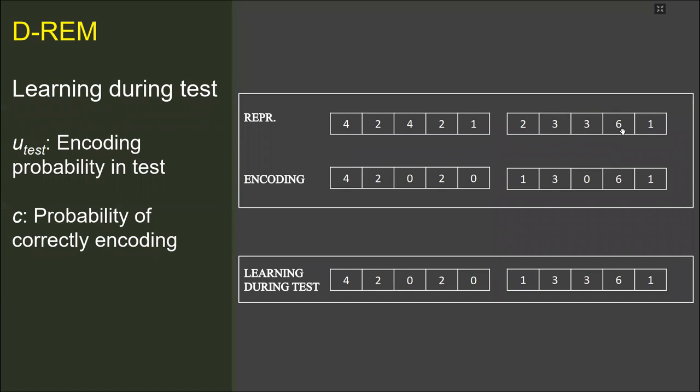The model assumes that we learn from testing experiences, so the memory is updated after each decision. There are two decision options. When a probe is recognized, the memory trace, the active features of which best matches to the probe, is updated. So the memory trace with the maximum likelihood value at the decision point is updated. The empty features of the memory trace are learned with the probabilities of u-test and c. When a probe is rejected, a new memory trace is added to the memory with the same encoding probabilities.